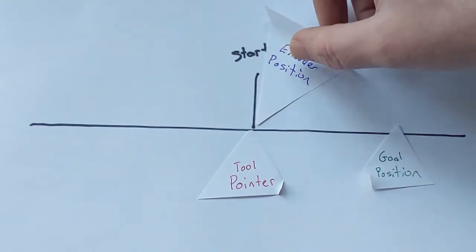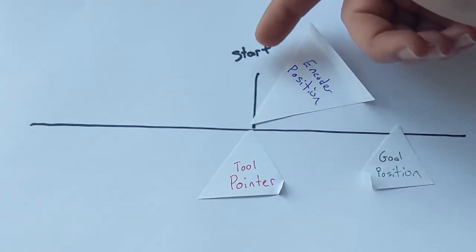At some point pick some random point on the line, it could be zero, that's going to be your starting position.